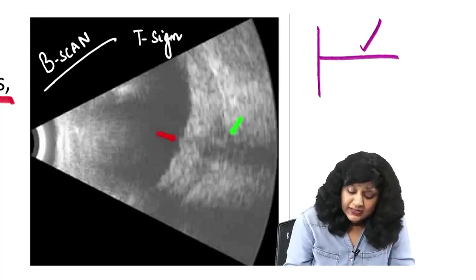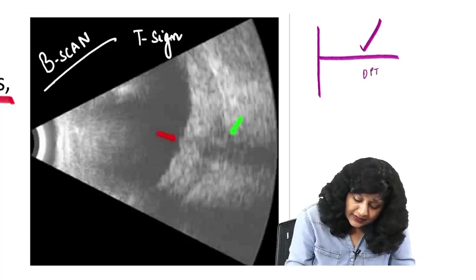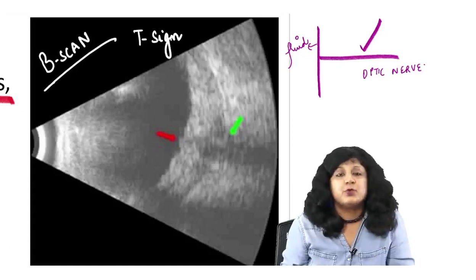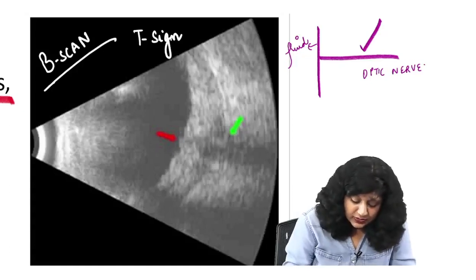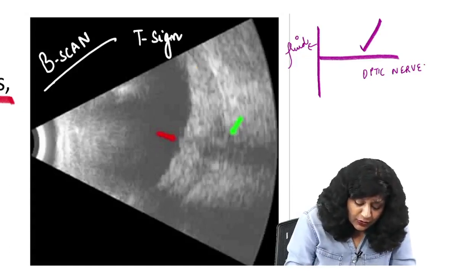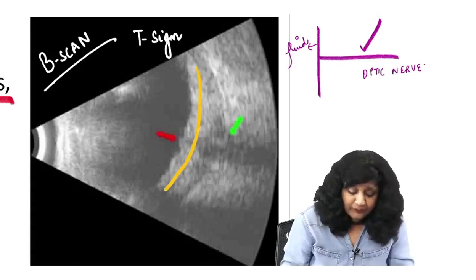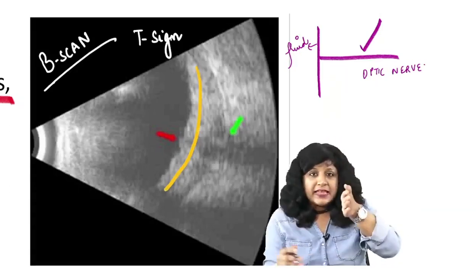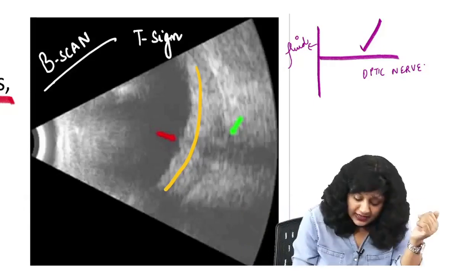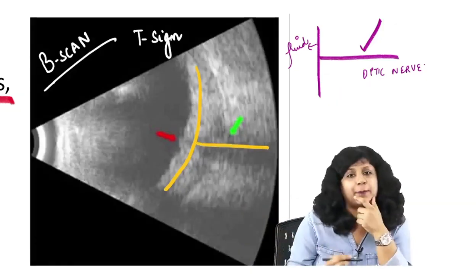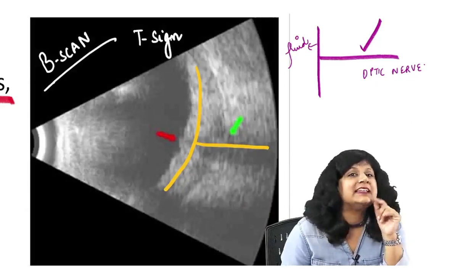On B-scan, this T-sign: one arm is formed by the optic nerve, and the other arm is formed by the fluid collecting in cases of posterior scleritis. This long arm and this horizontal arm is formed by the optic nerve. This is called the typical T-sign. Nowadays with more image-based questions being asked, they can give you this.